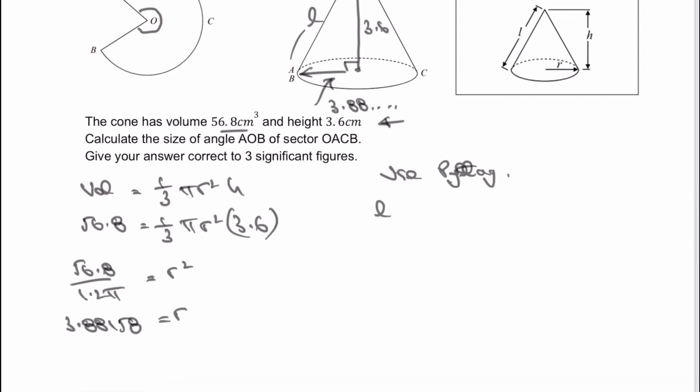Therefore, we can use Pythagoras to calculate the slant height. So L squared, which is what I'm choosing to call it, is going to equal the radius squared, which is 3.88158 squared, plus 3.6 squared, which is the vertical height. And that's going to give me the value of L, which is the slant height of the cone, is going to be 5.294.